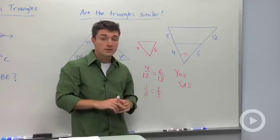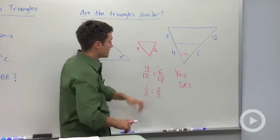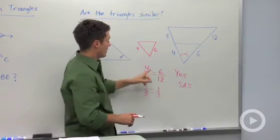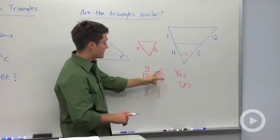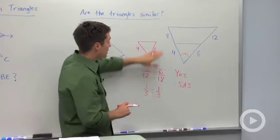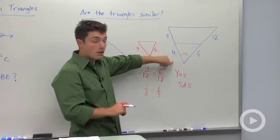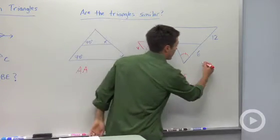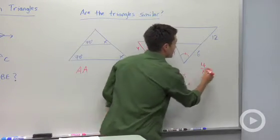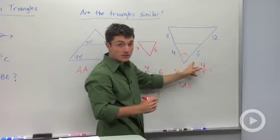Now one other interesting thing that you should notice is not only are four and 12 proportional and six and 18 proportional, but if I just looked at four and eight. Four to eight, if I write that ratio over here, is equal to the ratio of six to 12.